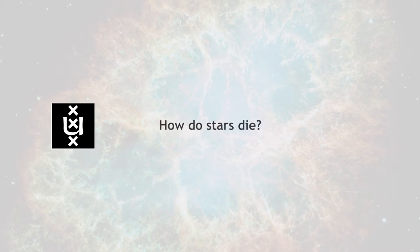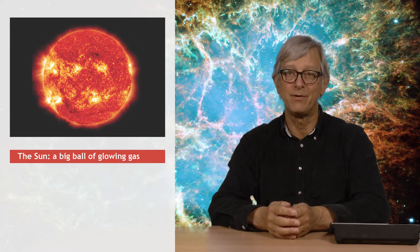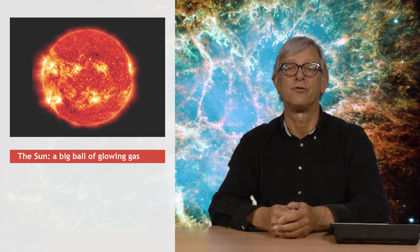Today's lecture is about the death of stars. How do stars die? To understand the answer to that question, we must first remind ourselves what a star is. Take the sun, our star. The sun is a big ball of glowing gas, 1.5 million kilometers in diameter, 6,000 degrees hot.